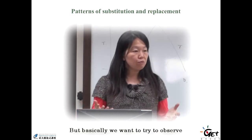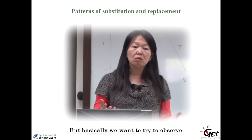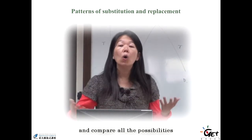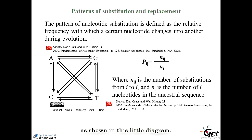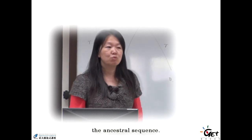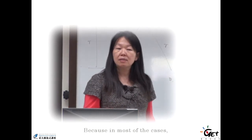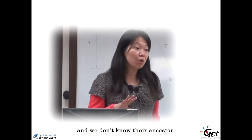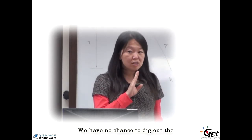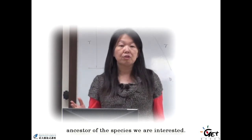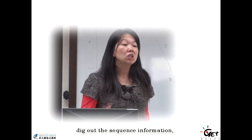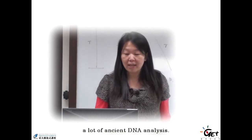We want to try to observe the patterns from one nucleotide to the others, and compare all the possibilities as shown in this little diagram. To do that, you have to reconstruct the ancestral sequence, because in most cases we are dealing with living organisms and we don't know their ancestor — we never met them. We have no chance to dig out a fossil that happens to be the ancestor of the species we're interested in. And even if you have the fossil, you might not be able to get the sequence information, although now we can do a lot of ancient DNA analysis.